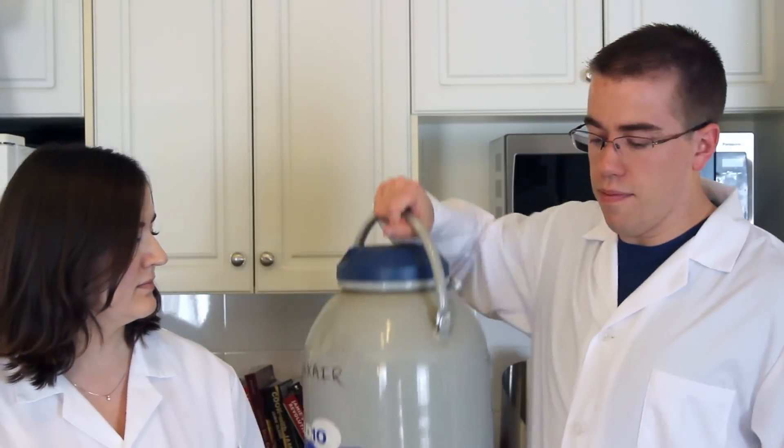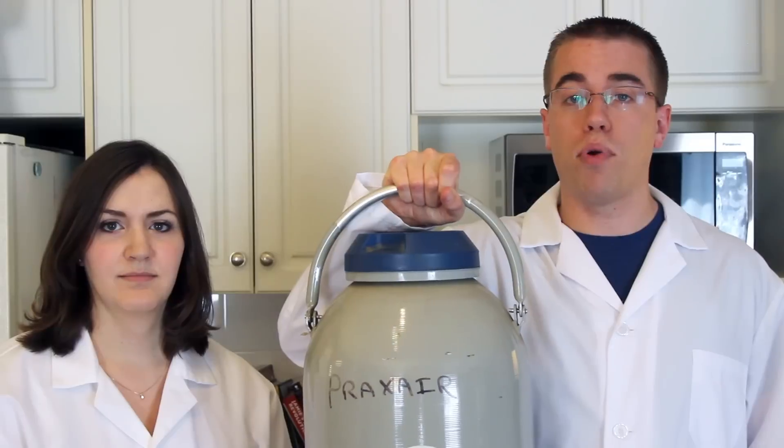The equipment you're going to need for this episode includes a Pyrex beaker or metal bowl. Don't use a normal glass container because it can't handle the shock of the cold temperatures. A variety of glow sticks. If you're using short ones like these, make sure you have a pair of tongs or a spoon to get them back out. And finally, you're going to need a large container of liquid nitrogen. We got this one from Praxair, but search online for a local distributor.